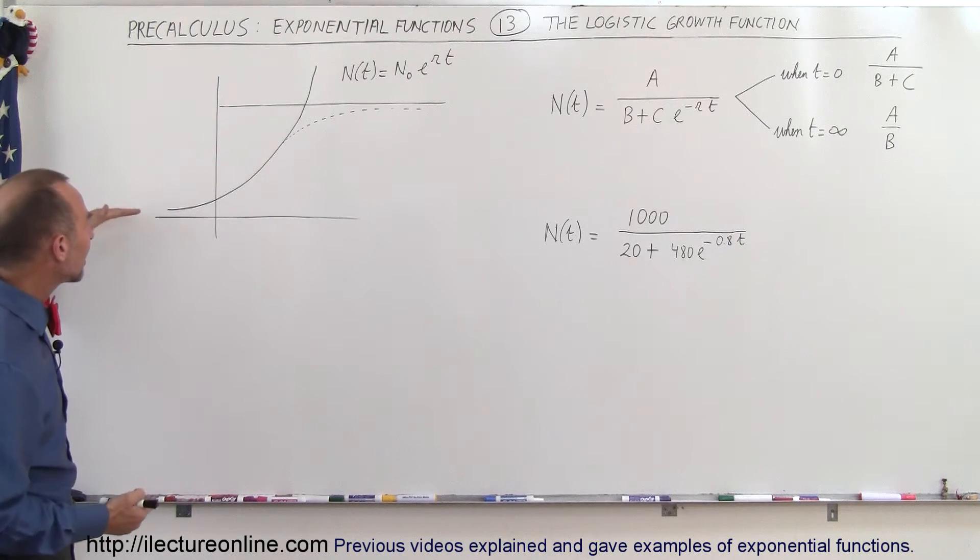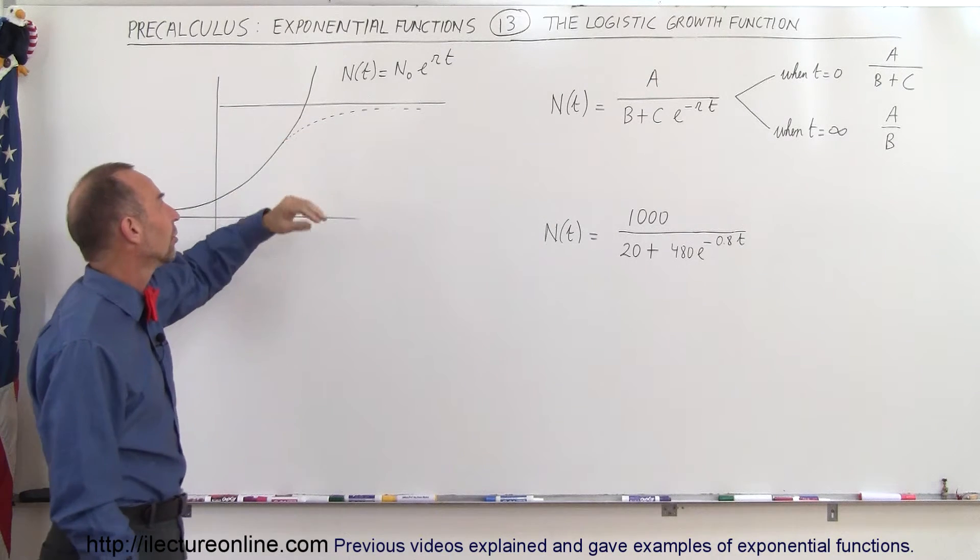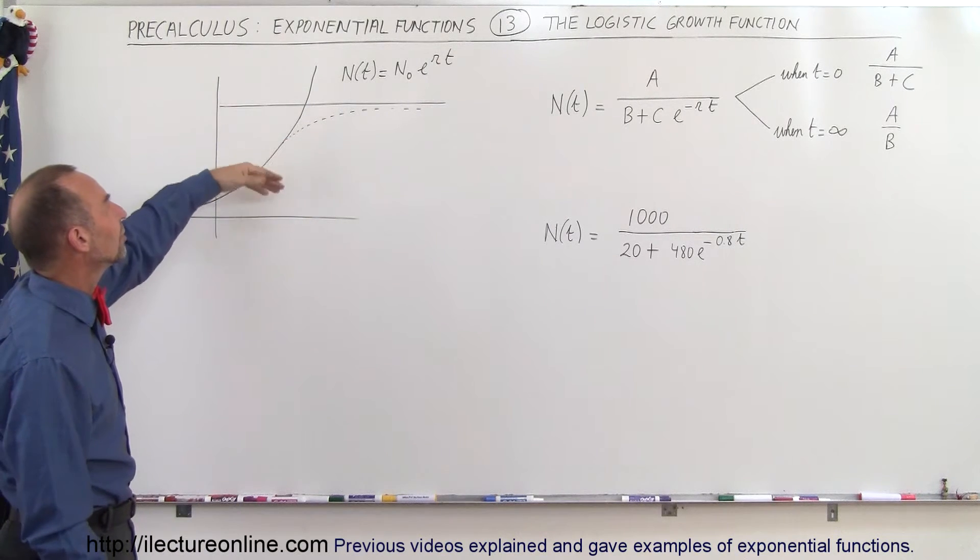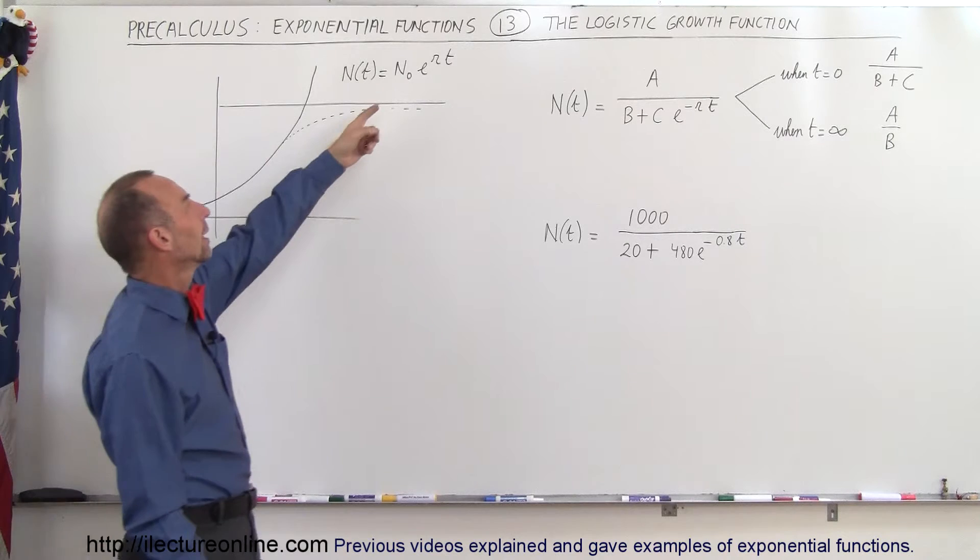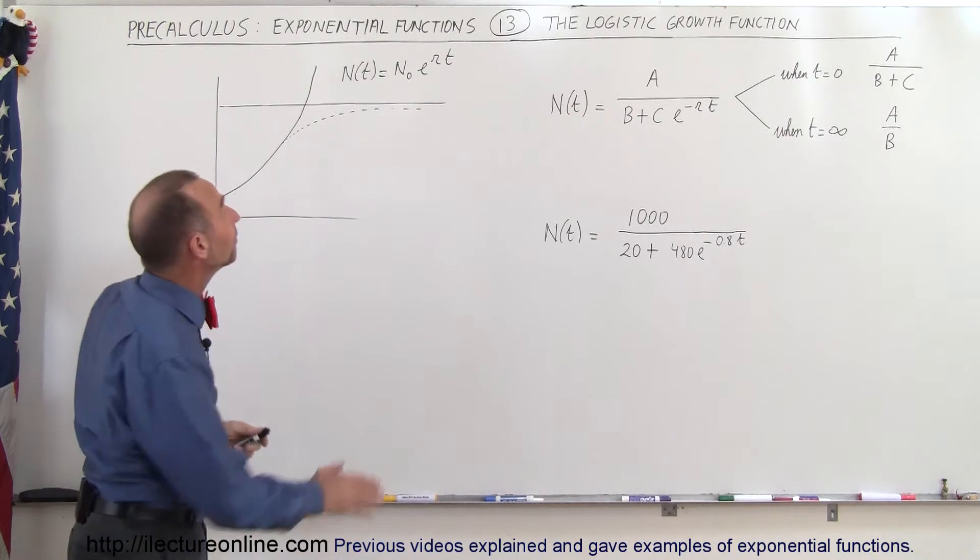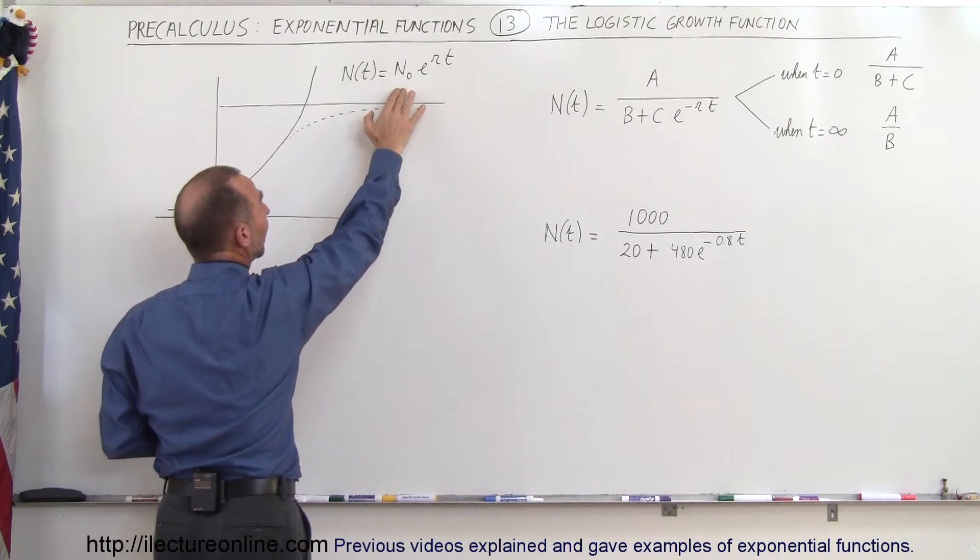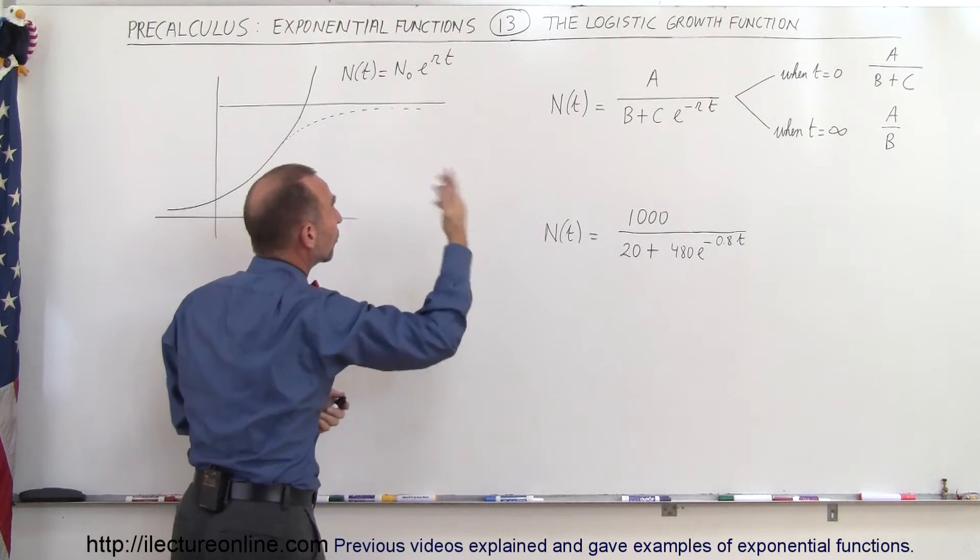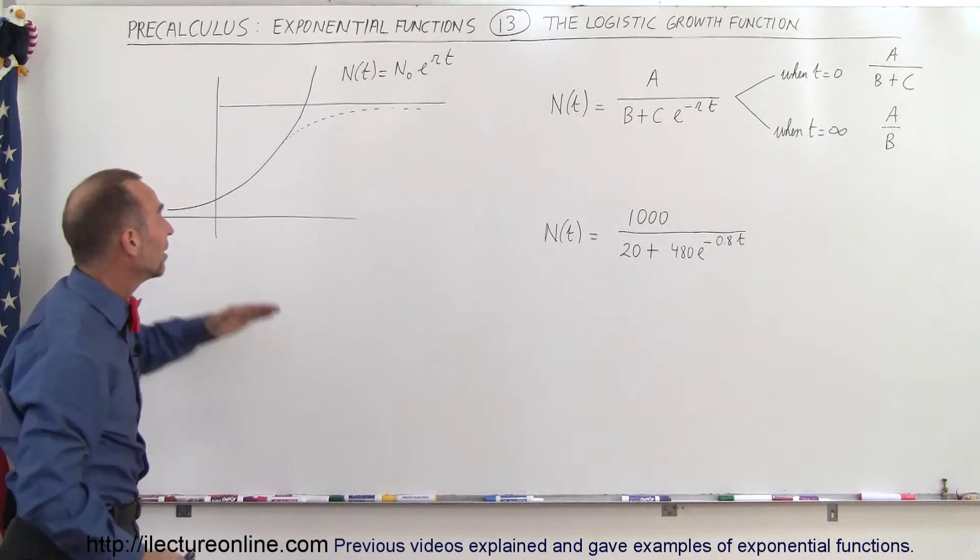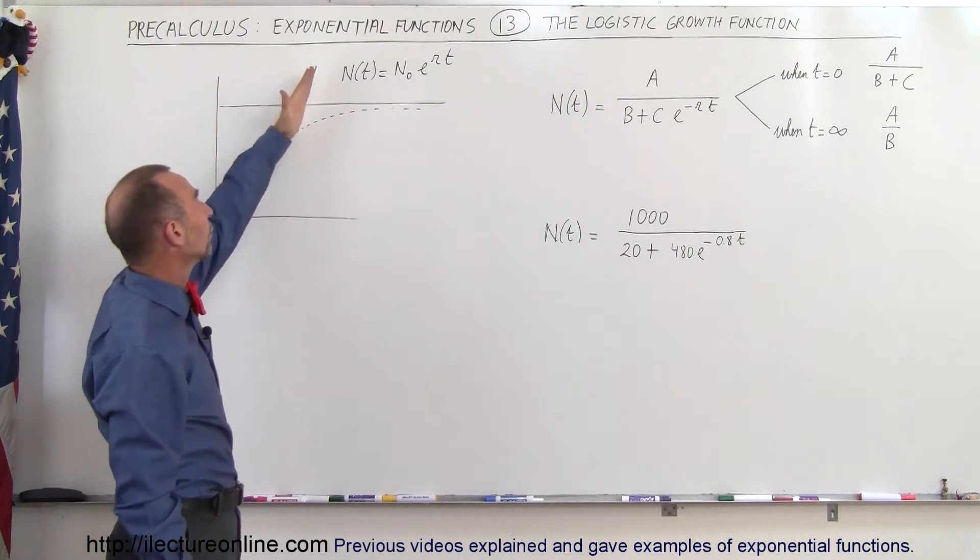So let's say that here we have a representation of an exponential growth function. The amount that you have at any point in time as a function of time is equal to the initial amount times e to the rt, r being the growth rate and t being the time. You can see that it would just continue growing and growing and growing.